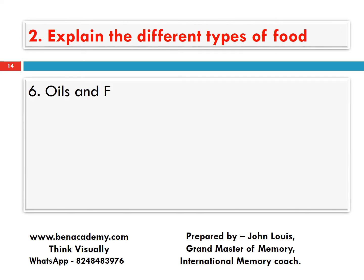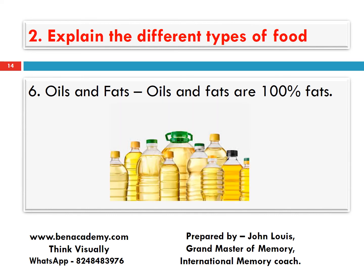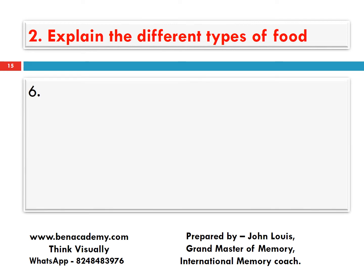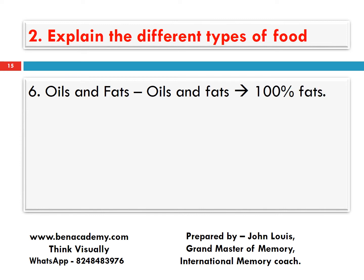Sixth one — oils and fats. Oils and fats are 100% fats, full of fats. Very simple to remember: oils and fats are 100% full of fats, no carbohydrates, no protein.